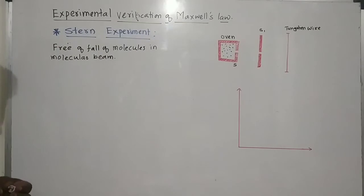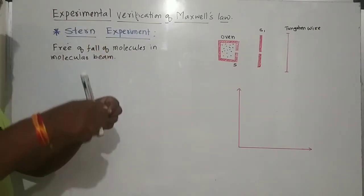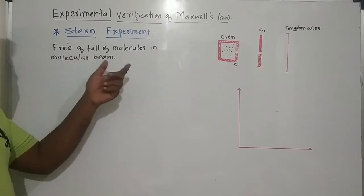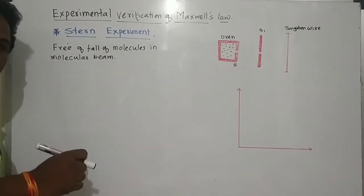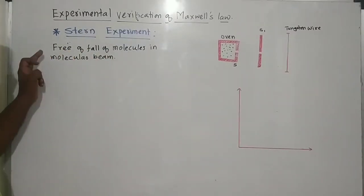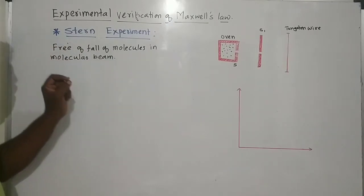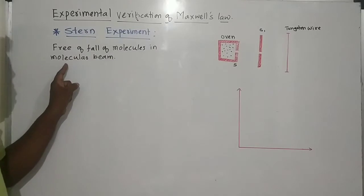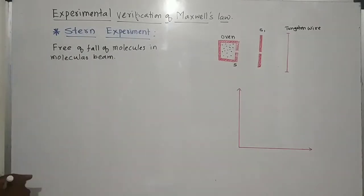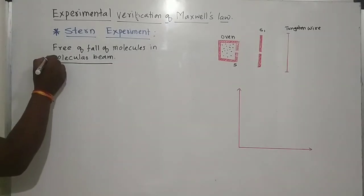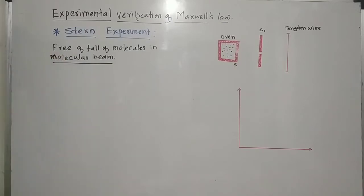Here the molecules are made to fall freely under the gravitational force, according to their speeds. We are going to measure the number of molecules. The main aim of the experiment is the study of free fall of molecules in a molecular beam. There are two different methods to obtain a molecular beam.